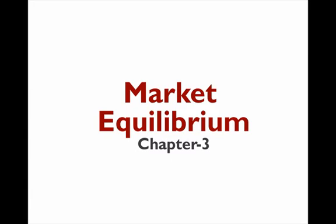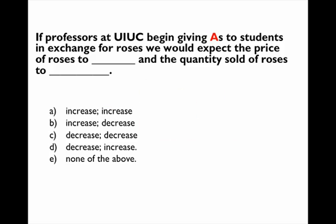Let's start with a few of the market equilibrium questions we did in class. This is Chapter 3. The first one involves a professor at UIUC beginning to give A's to students in exchange for roses.